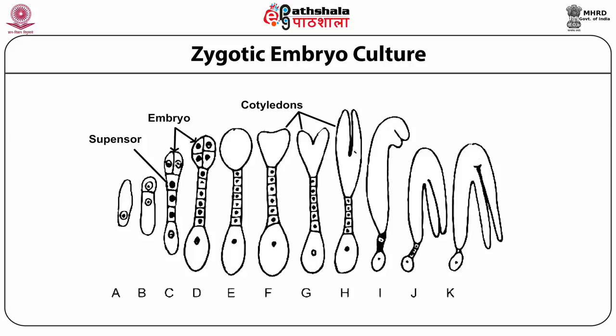You will see in this diagram the stages of embryo development in Capsella bursa-pastoris, starting from a single cell zygote and developing up to a fully developed dicotyledonous embryo.